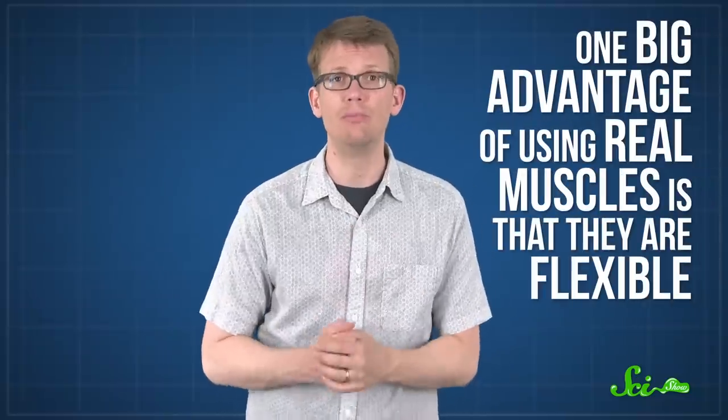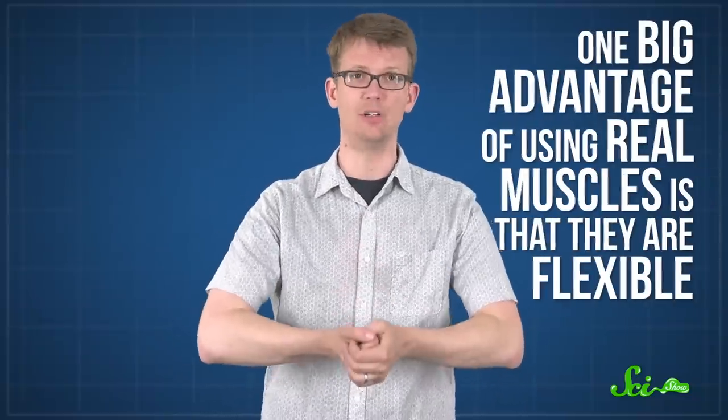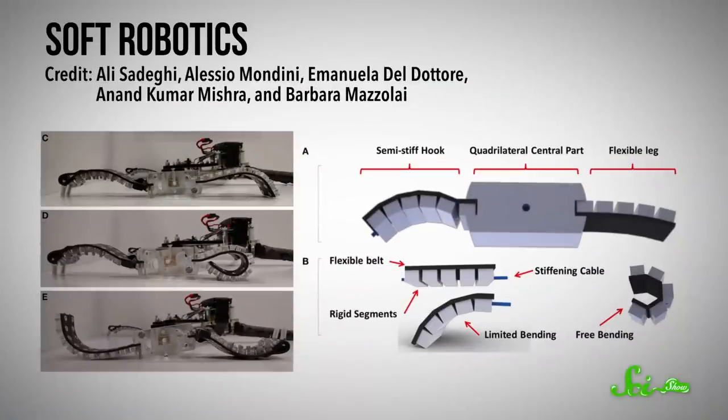But there are some good reasons to continue perfecting these bio-hybrid robots, even if they seem pretty creepy. One big advantage of using real muscles is that they are flexible. And the idea of using soft, flexible moving parts is the driving force behind the field of soft robotics. These robots use things like cables and inflatable bladders to move instead of metallic motors, and their flexibility allows them to adapt better to new tasks.